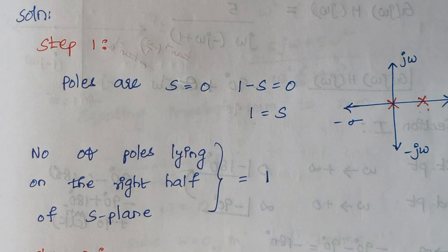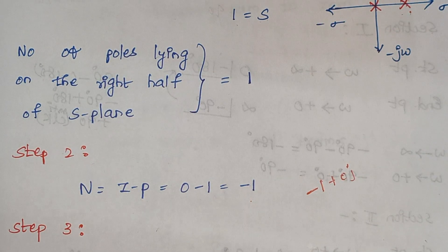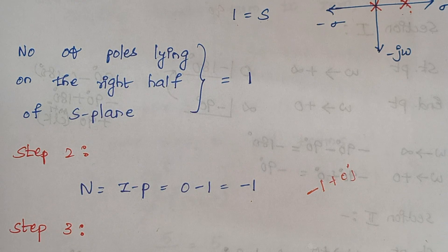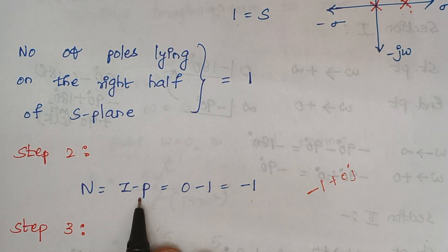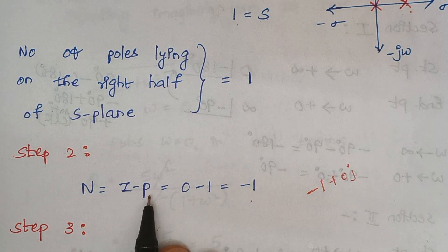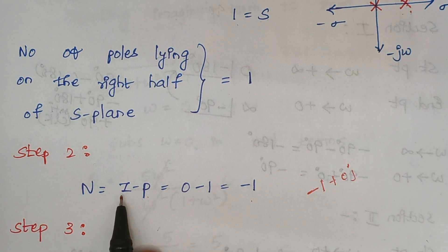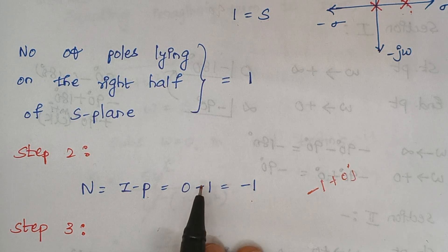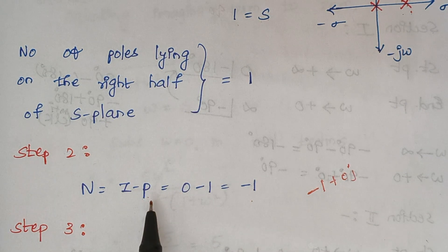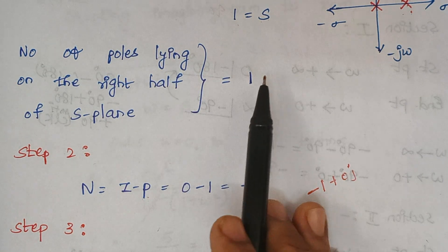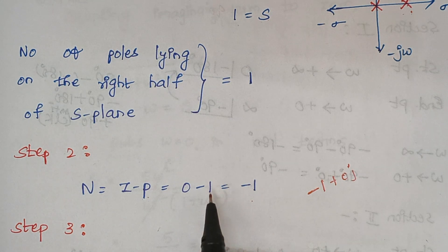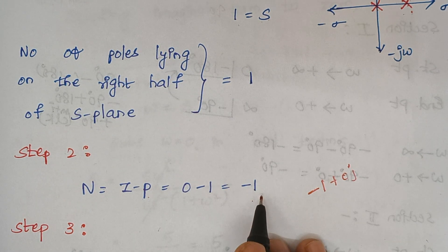Step 2 is to find the number of encirclements N, given by the formula N = Z minus P. There are no zeros, so Z = 0, and the number of poles on the right half S-plane is P = 1. Therefore N = 0 minus 1 = minus 1.